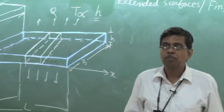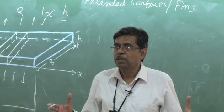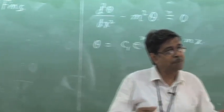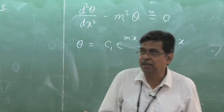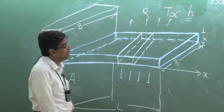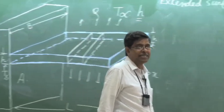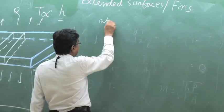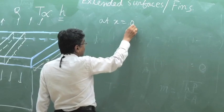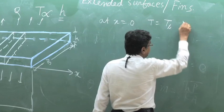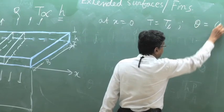Boundary conditions come from the physical problem defined with its boundary and other conditions — they have to be physically defined. One boundary condition prescribed by the physics is that base temperature is T_b where x is measured. So therefore, at x equal to 0, T equals T_b, which means theta equals theta_b.